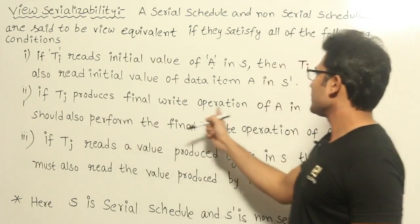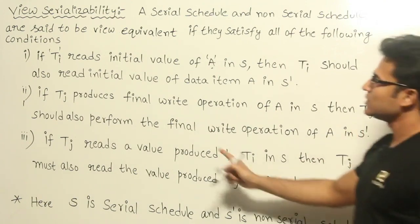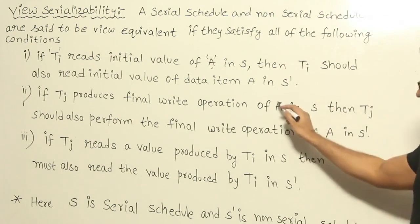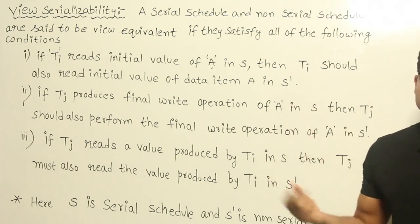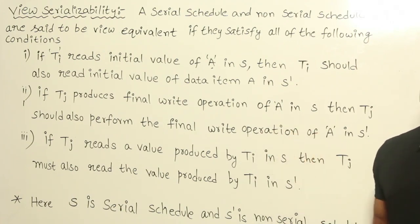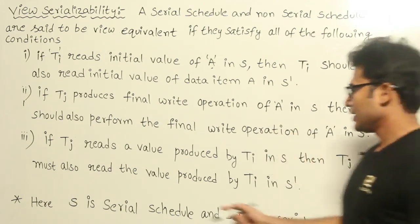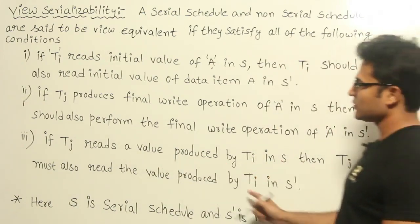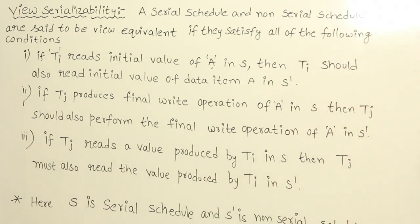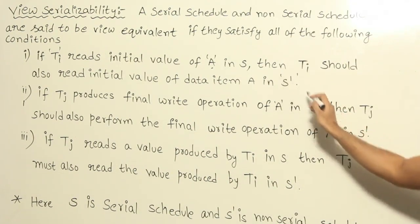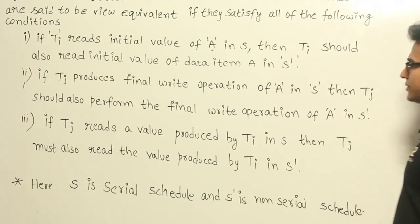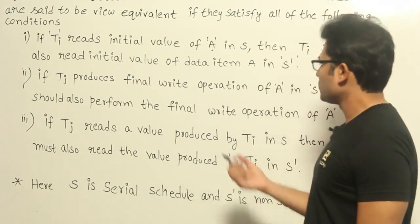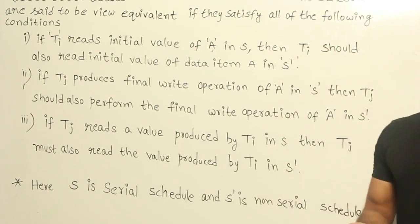The next condition is: if TJ produces the final write operation of A in S, then TJ should also perform the final write operation of A in S dash. Which means for every data item A, whoever writes it last should write it last in both the schedules. And if TJ reads a value produced by TI in S, then TJ must also read the value produced by TI in S dash.